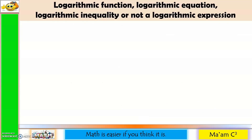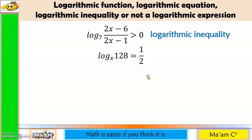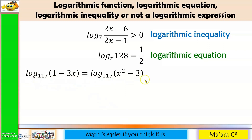Determine whether the following is a logarithmic function, logarithmic equation, logarithmic inequality, or not a logarithmic expression. First one: we have a log and an inequality symbol — therefore, this is a logarithmic inequality. Another one: we have a log and an equal sign — so this is a logarithmic equation. Next one: both sides are logarithmic expressions and there is an equal sign — so this is a logarithmic equation.